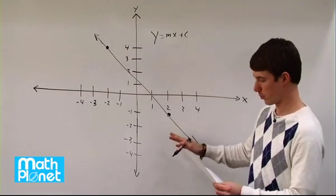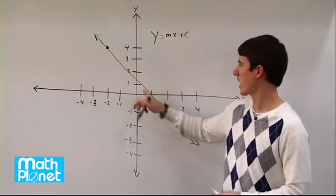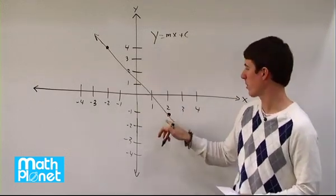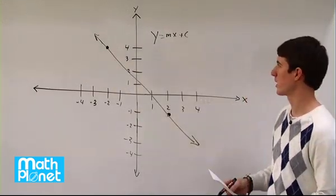So we need to find where this crosses the y-axis to get our c, but we don't really have a good answer for that right away. But what we do have are two points. If we have two points on a line, then we can find everything we need about it.